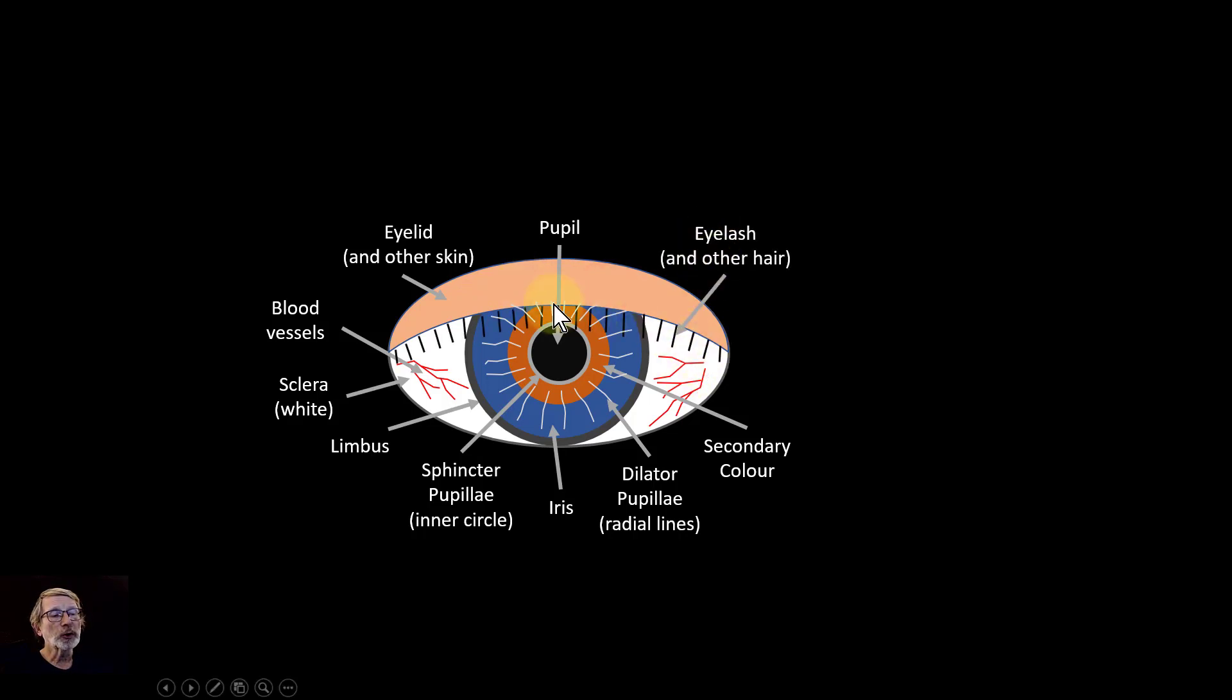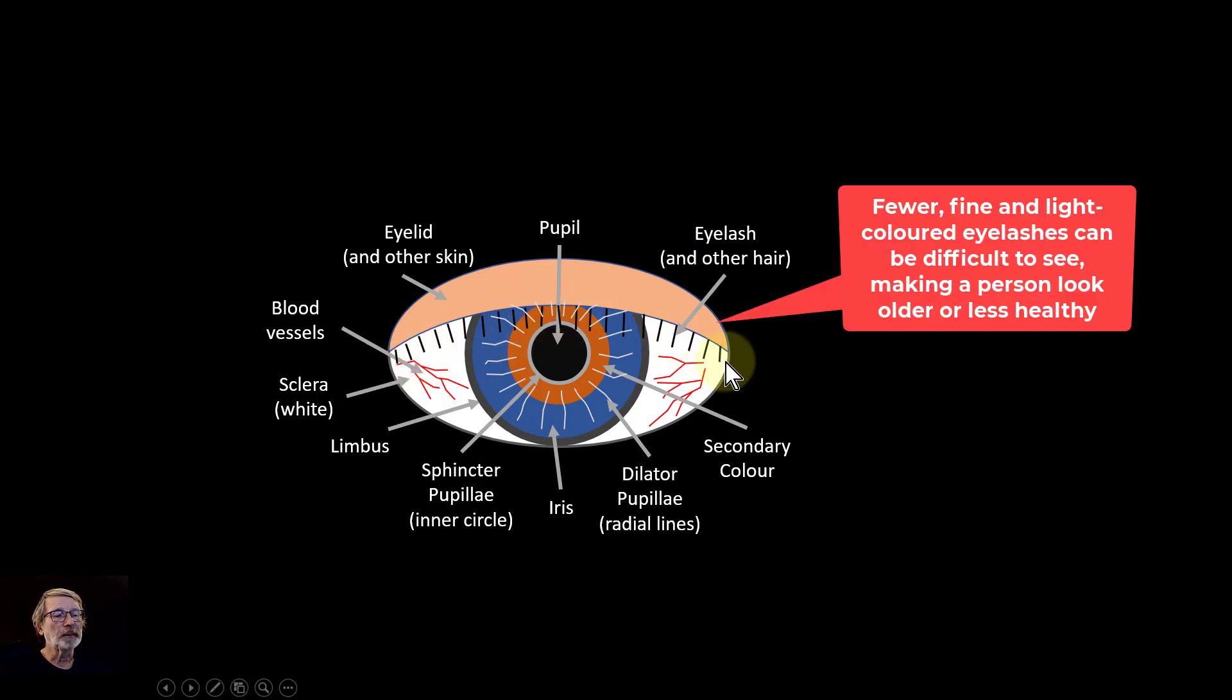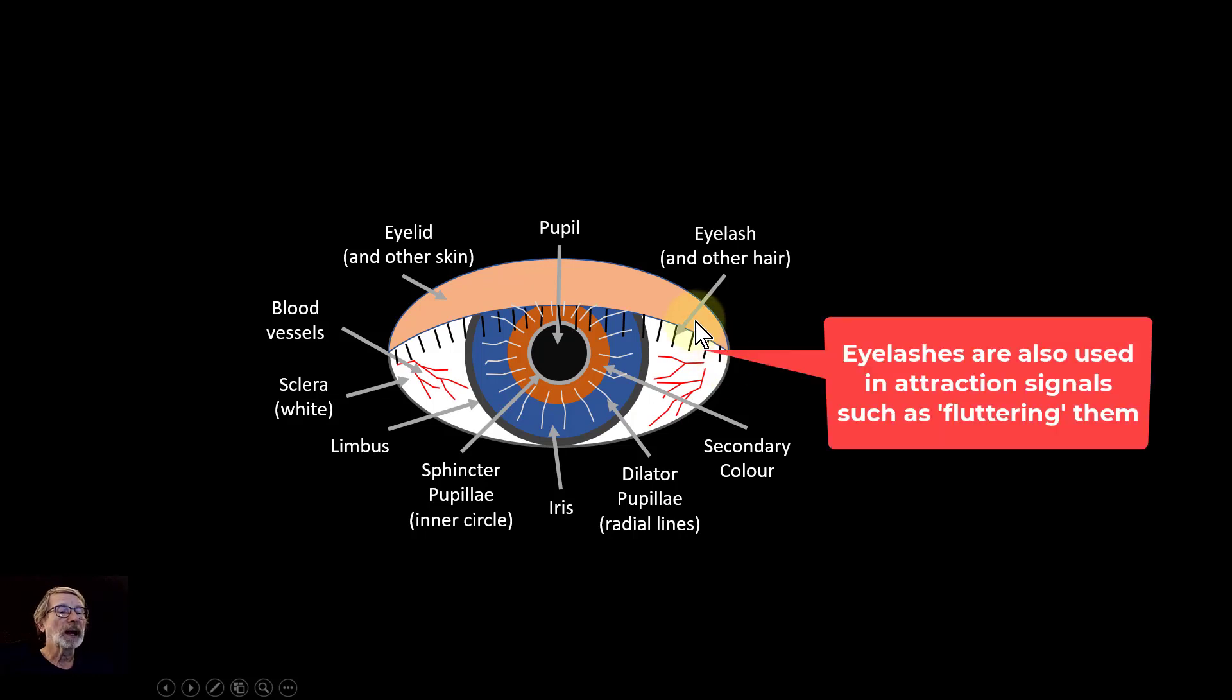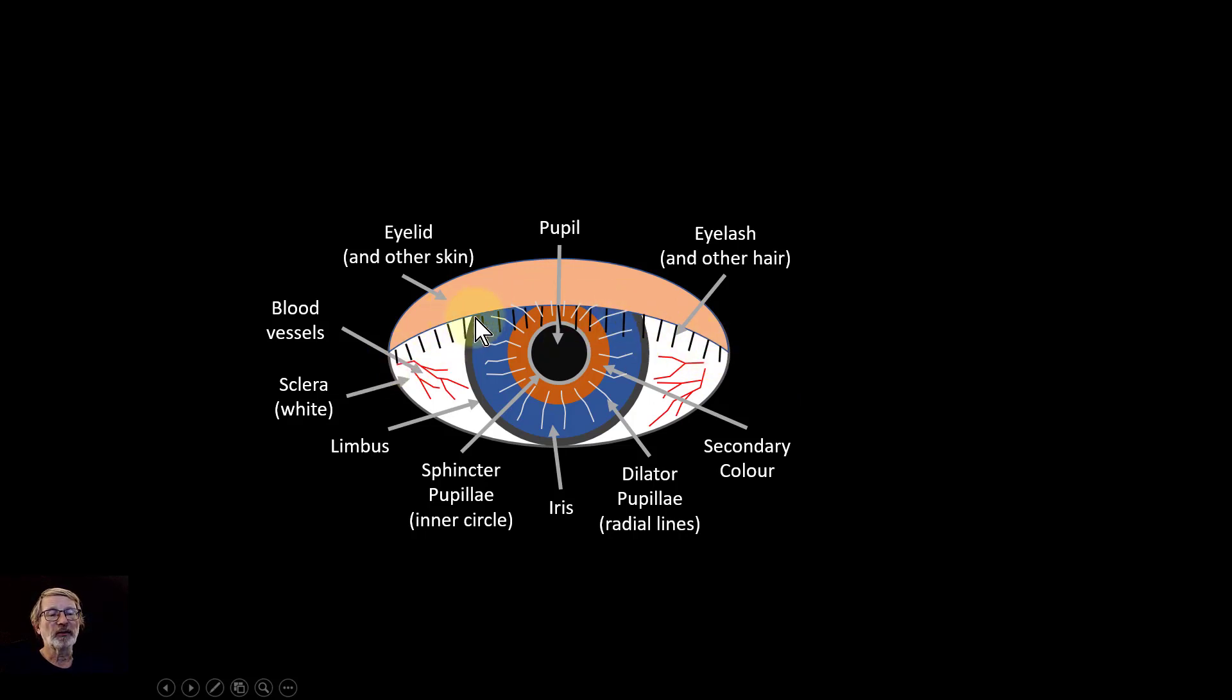You also have eyelashes. Eyelashes can be an indicator of health as well and particularly also age, and when they're longer they can indicate that, because when you're older they can kind of fall out or fade. But if you've got blonde hair then they may not be visible as well. So we tend to use mascara to make them more visible. At least some people do.